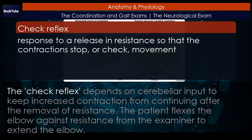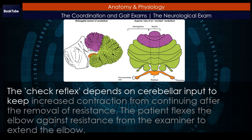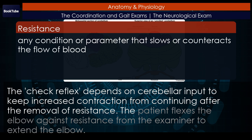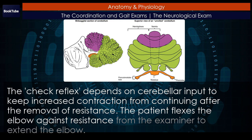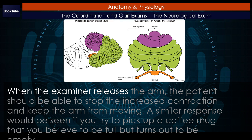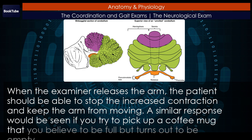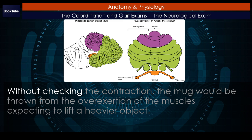The check reflex depends on cerebellar input to keep increased contraction from continuing after the removal of resistance. The patient flexes the elbow against resistance from the examiner to extend the elbow. When the examiner releases the arm, the patient should be able to stop the increased contraction and keep the arm from moving. A similar response would be seen if you try to pick up a coffee mug that you believe to be full but turns out to be empty. Without checking the contraction, the mug would be thrown from the overexertion of the muscles expecting to lift a heavier object.